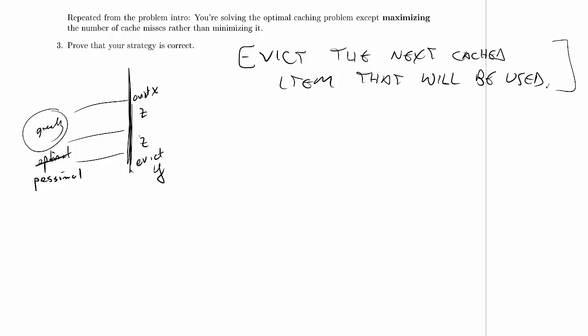When we have a choice over what to evict, this has to be not a dummy item. We don't care about the dummy items. It doesn't matter what order they go in. So z is not a dummy item. Sorry, x and y are not dummy items that we're getting rid of. We, at this point, have to choose a real item. We know that greedy chooses the next cached item that will be used. So if we look down the sequence here, at some point x is used, and then maybe y is used later on.